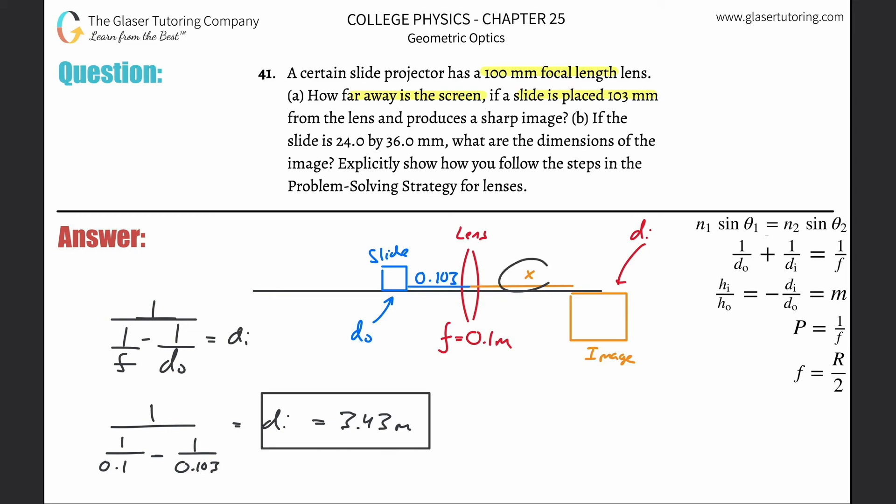3.43 meters is the x value in the problem—the distance of the image relative to the lens. That takes care of part a. Part b says if the slide is 24 by 36 millimeters, what are the dimensions of the image?